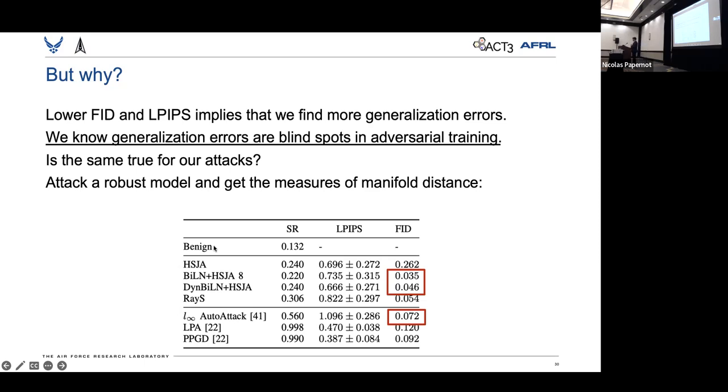So then we investigate the effect of when we apply a strong gradient-level attack, such as L-infinity AutoAttack, which is considered state-of-the-art for adversarial training, and LPA and PPGD, which are perceptual-based gradient-level attacks. We can actually achieve a similar distance to the manifold as PPGD and LPA, while actually achieving a similar or lower success rate, all of this without actually requiring that gradient information.